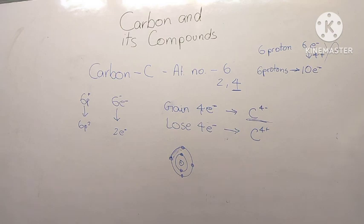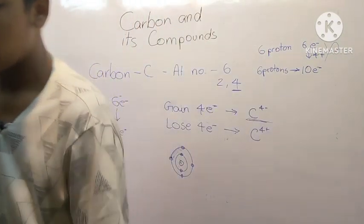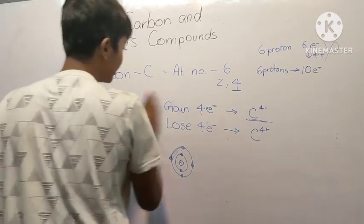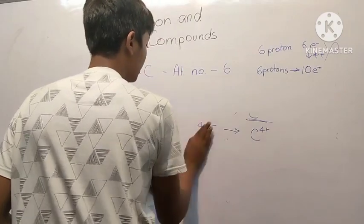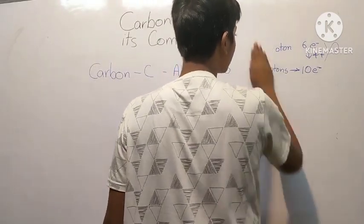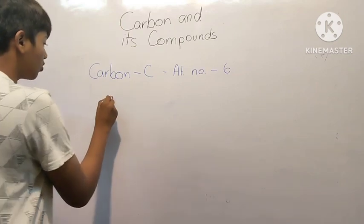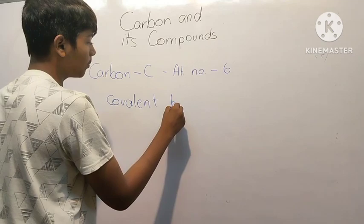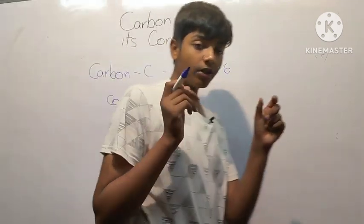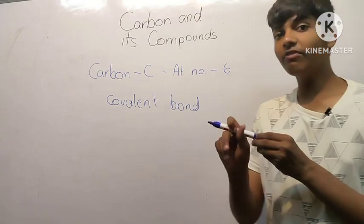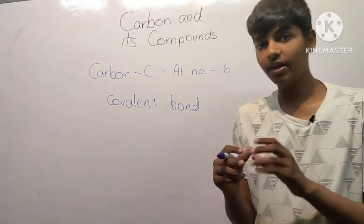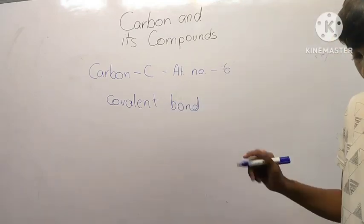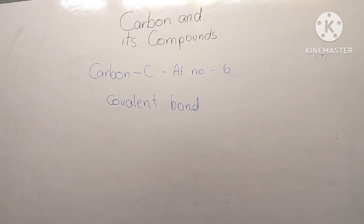So how does carbon complete its octet? We learned about ionic compounds in metals and non-metals. What carbon does instead is form a covalent compound. In an ionic bond, the bond forms because of exchange of ions — a cation attracted to an anion. But in a covalent bond, it is formed by sharing of electrons.